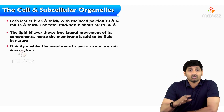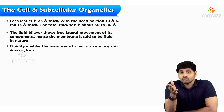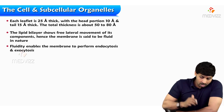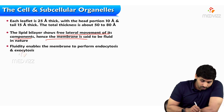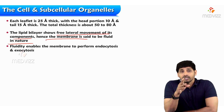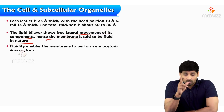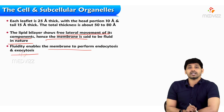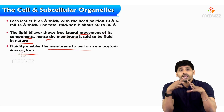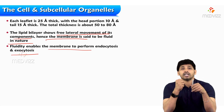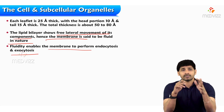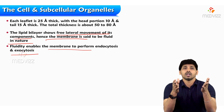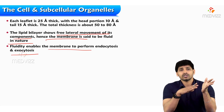Each leaflet is 25 angstroms thick — with the head portion 10 angstroms and tail 15 angstroms thick — giving a total membrane thickness of 50 to 80 angstroms. The lipid bilayer shows free lateral movement of its components; hence the membrane is fluid in nature. Fluidity mainly depends on cholesterol concentration and enables the membrane to perform endocytosis (uptake from outside to inside) and exocytosis (transport from inside to outside).